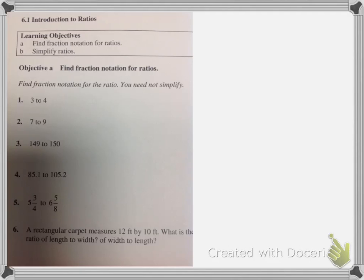To get us started, we've got several ratios listed on the page: 3 to 4, 7 to 9, 149 to 150, and so on. You'll notice that there is the word 2 in between the two numbers. This is one way to write a ratio.